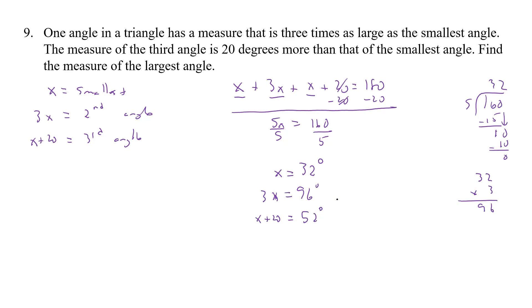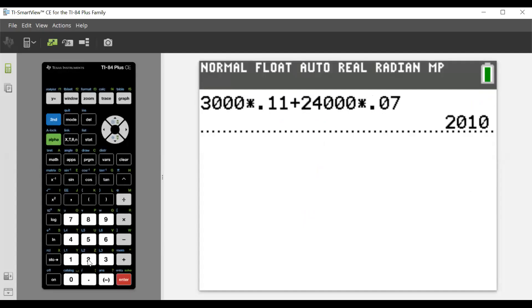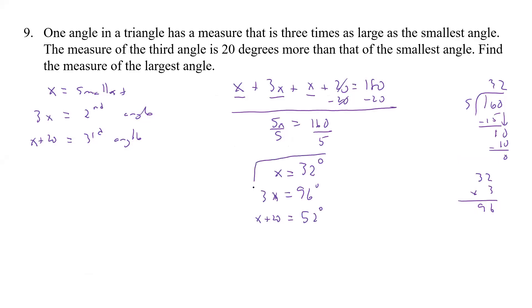Now, our check would be add all those together. 32 plus 96 plus 52. 32 plus 52 plus 96. And we get 180. So it does check out. So those, then, are our three measures, even though this is the only one they actually asked for, is the 52. But we got all three, so we could do our check.